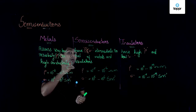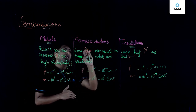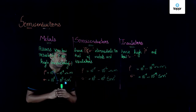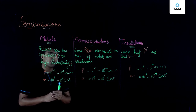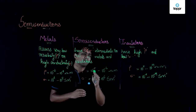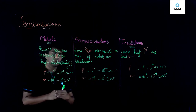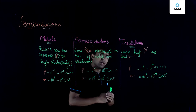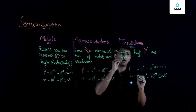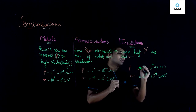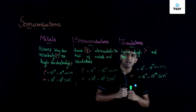For semiconductors, resistivity and conductivity are intermediate to that of metals and insulators. The resistivity of semiconductors ranges from 10⁻⁵ to 10⁻⁶ ohm-meter and conductivity from 10⁵ to 10⁶ Siemens per meter. For insulators, we find high resistivity and low conductivity — resistivity ranges from 10¹¹ to 10¹⁹ ohm-meter and conductivity from 10⁻¹¹ to 10⁻¹⁹ Siemens per meter.